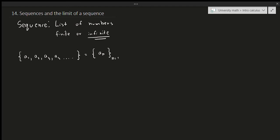It could start at 0 — it doesn't matter. The notation with infinity just means we have an infinite number of terms going from 1 to infinity, starting with n equals 1, giving us a1.